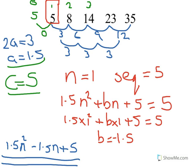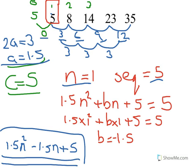For this one, you should find that 2A equals 3, so A is 1.5. C — when you work backwards, the same as the last one — you take away 12, then take away 9, take away 6, take away 3, so take away nothing. So 5 take away nothing is 5, so C is 5. Then, substituting in and using the first term when N is 1 and the sequence is 5, you get B equals minus 1.5. Don't forget to write your final answer somewhere on the page.